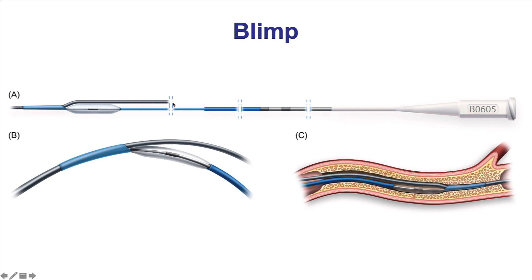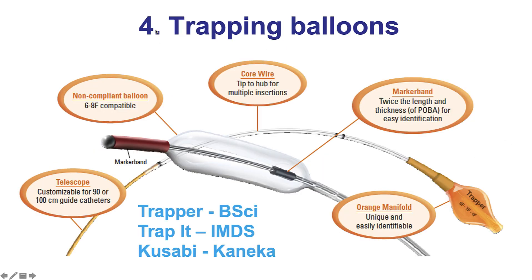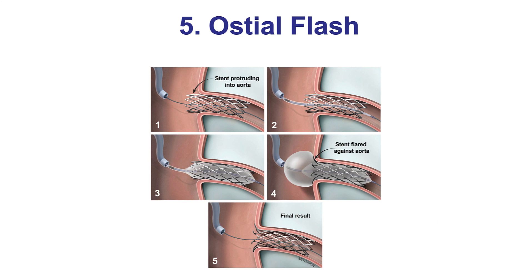There is another balloon called the blimp that is currently available in Europe. The fourth category of balloons are the trapping balloons, and there is only one available in the U.S., the Trapper from Boston Scientific, with others available internationally. The Trapper balloon is unique in that it does not have a wire lumen, which makes it lower profile. It is advanced inside the guide catheter next to equipment in order to perform the trapping technique and allow fixing of the guide wire while removing microcatheters or other equipment.